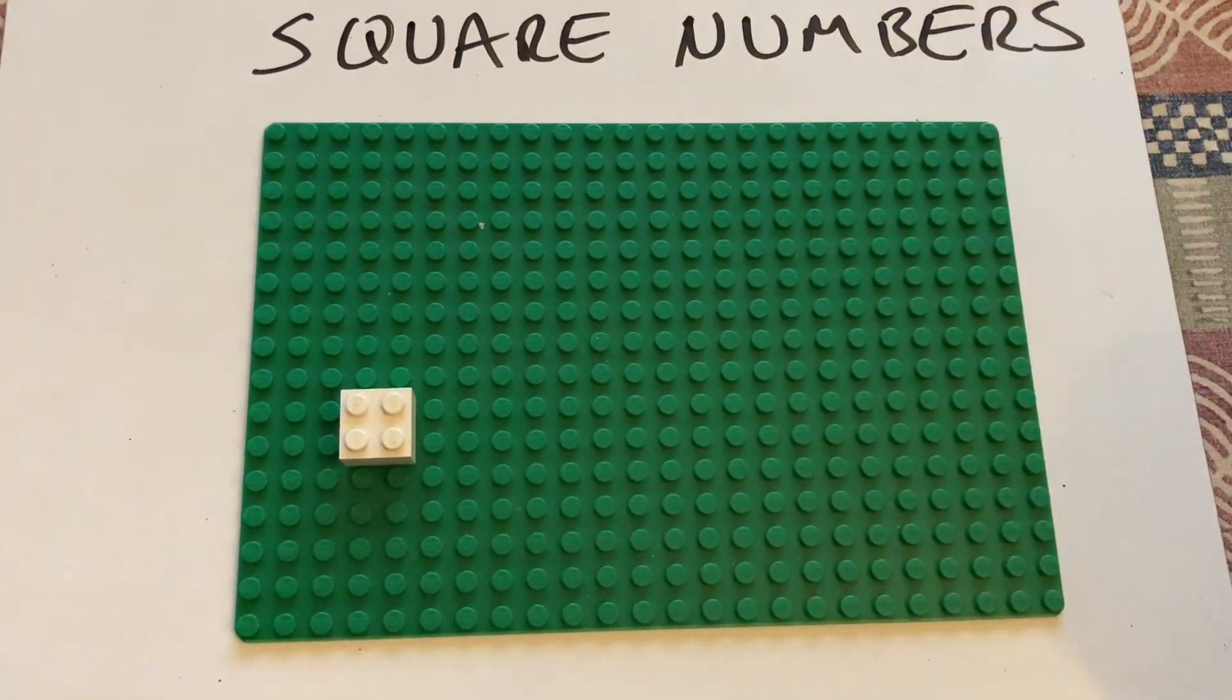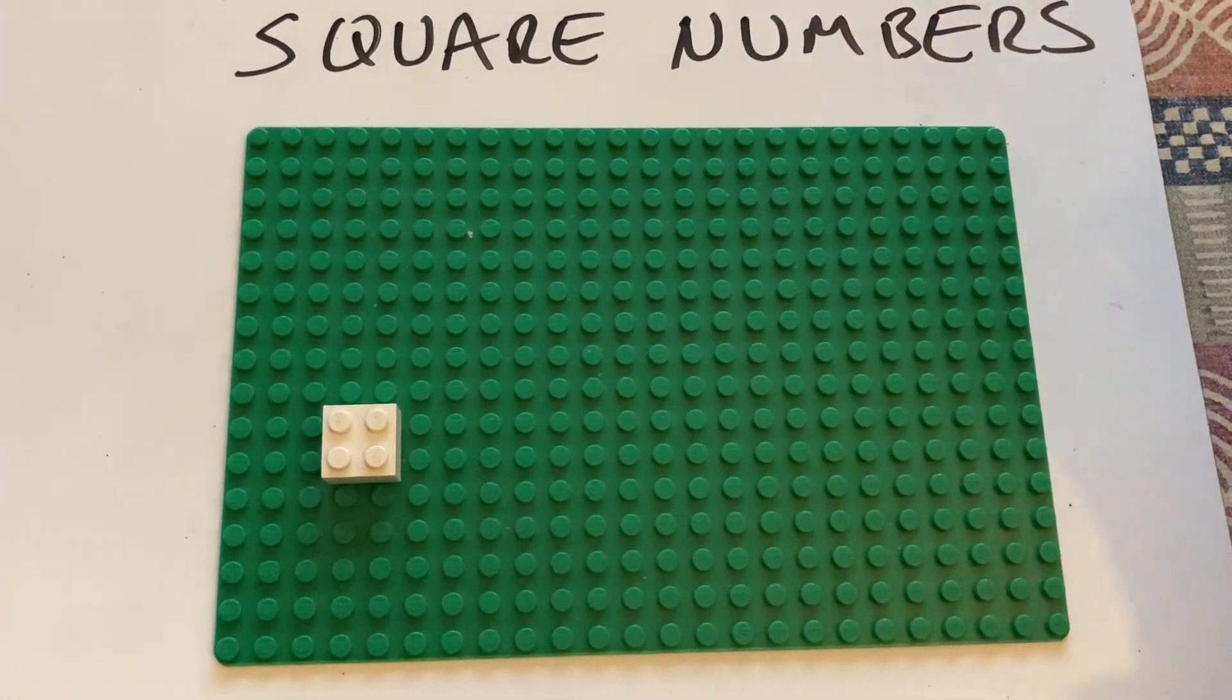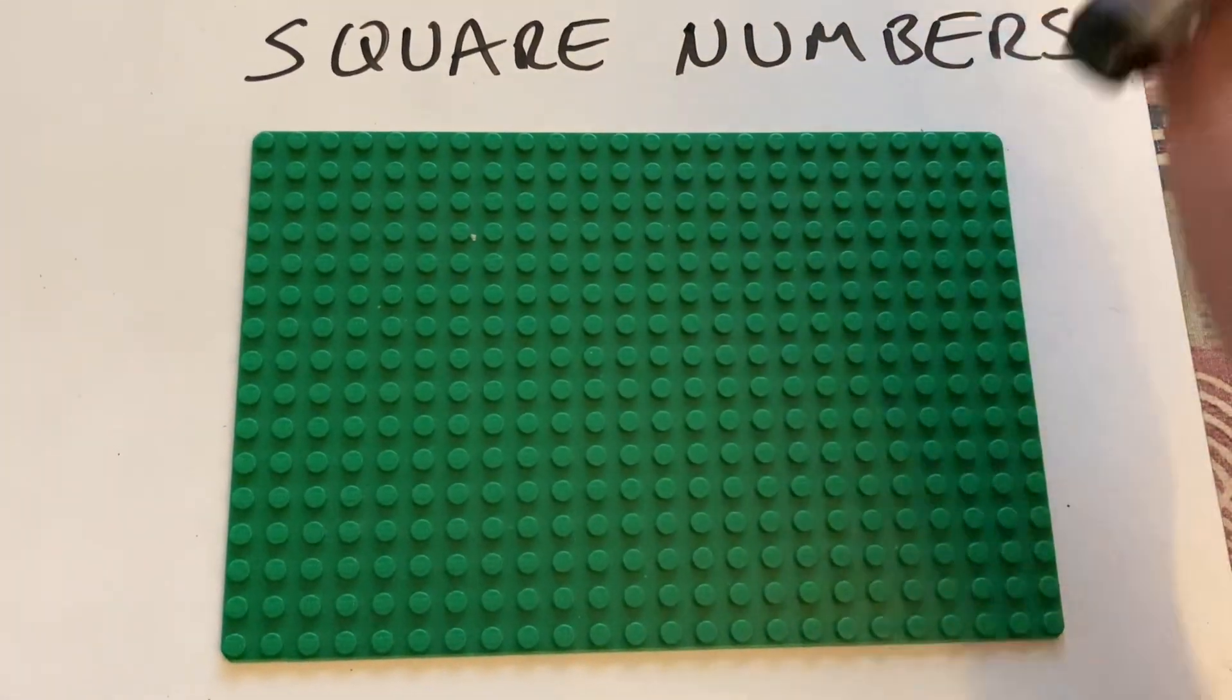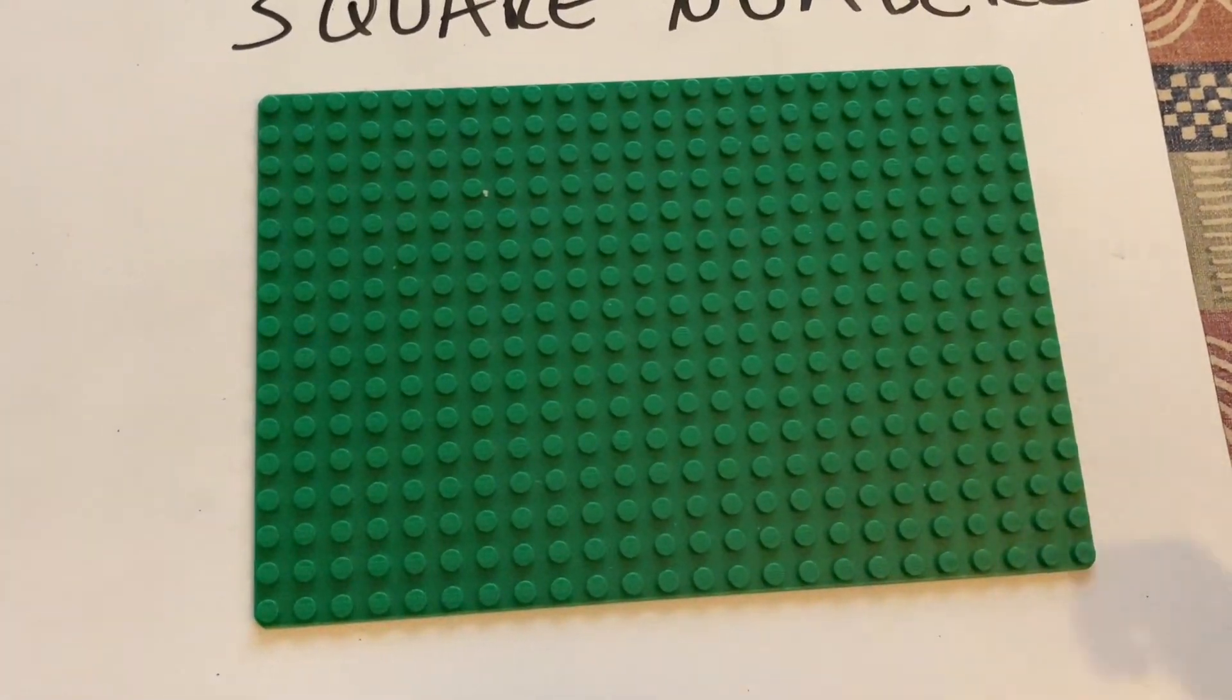Hello and welcome to Martin Maths. We're going to do square numbers with Lego. My guest presenter is going to help me going through the square numbers. So they're numbers where that number times itself makes a square.